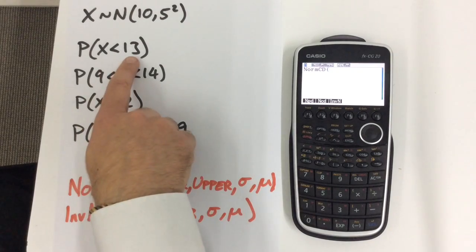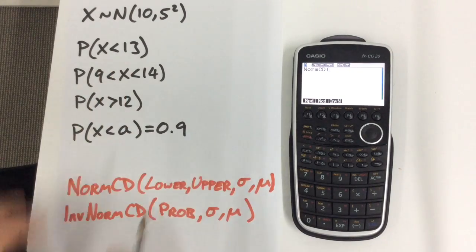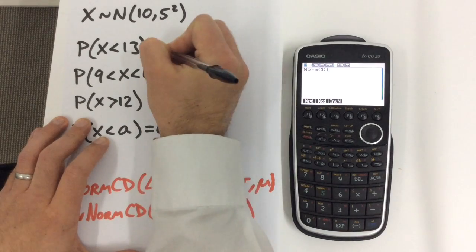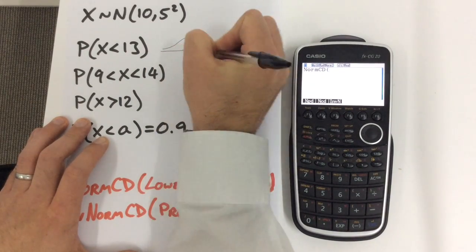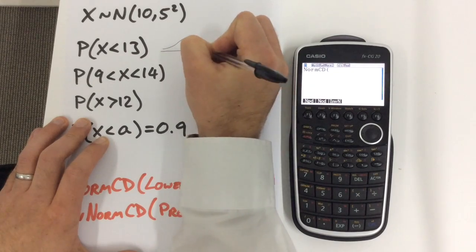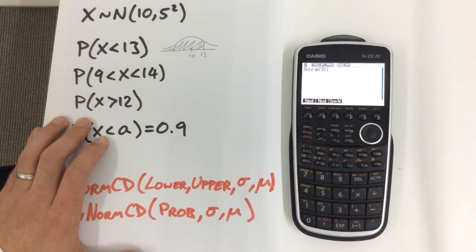So we want less than 13, and of course in our normal distribution we would have a mean of 10 and we're looking for 13 and down. We're looking for the shaded section.